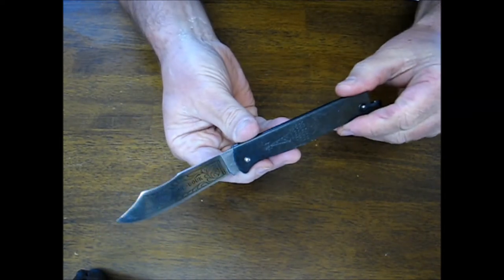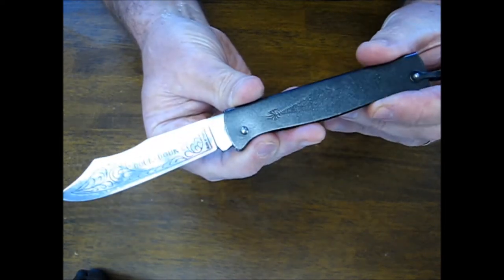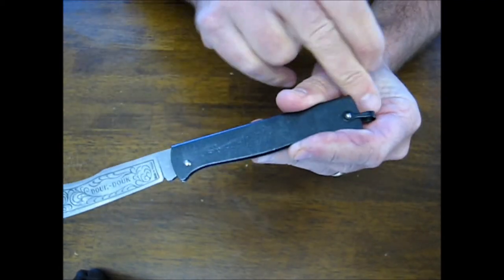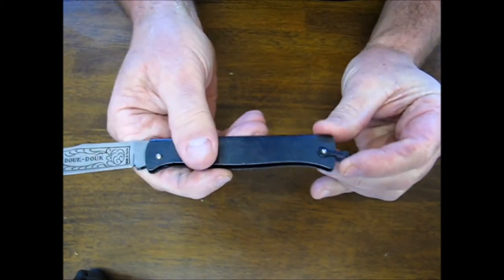The blade is 3 1/8 of an inch long, and overall it measures in at 7 1/2 inches long. There's a bail on the end of the handle.